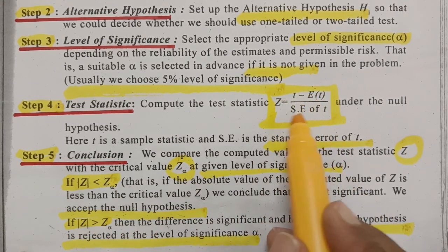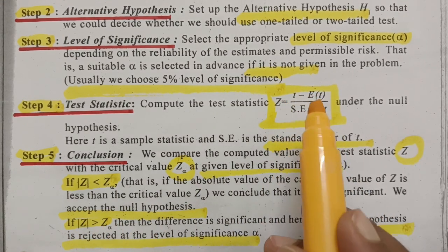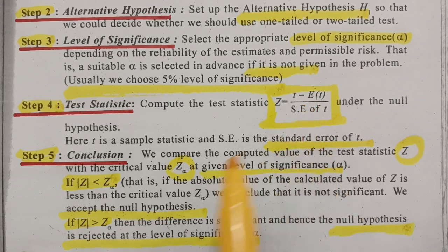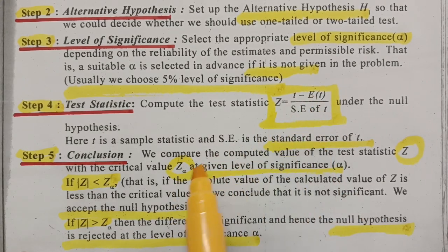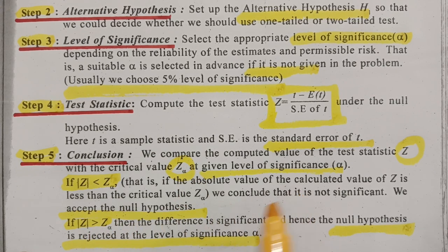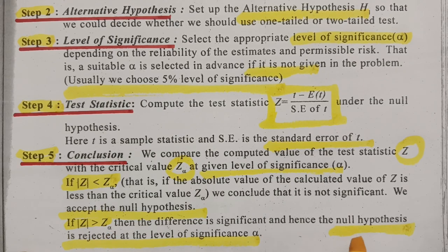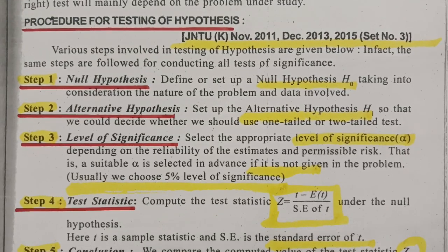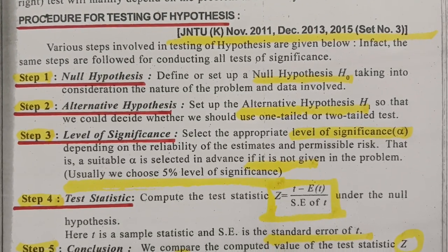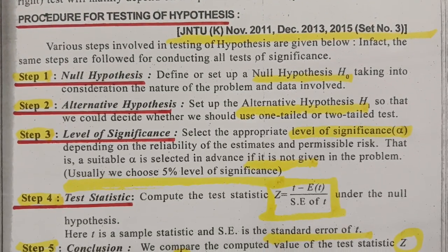After computing the value, we compare it with Z alpha. If Z is less than Z alpha, then we accept the null hypothesis. If Z is greater than Z alpha, then the null hypothesis is rejected. These are the five steps involved in the procedure of testing of hypothesis.